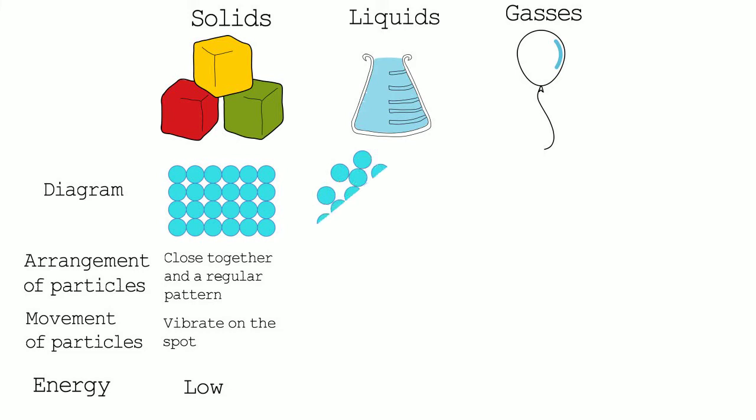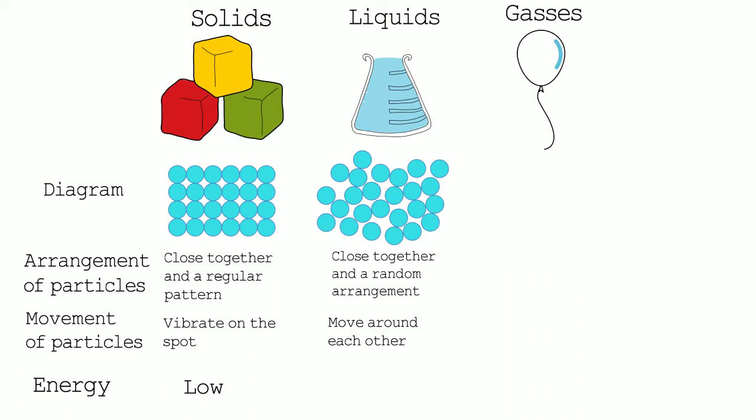The next state of matter is liquids. There are weaker forces of attraction between the particles in a liquid. The particles will be close together and in a random arrangement. They can move past each other and flow. Liquids will take the shape of the container that they are in. They cannot be compressed or squashed. The particles in liquids have more energy than solids but less than gases.